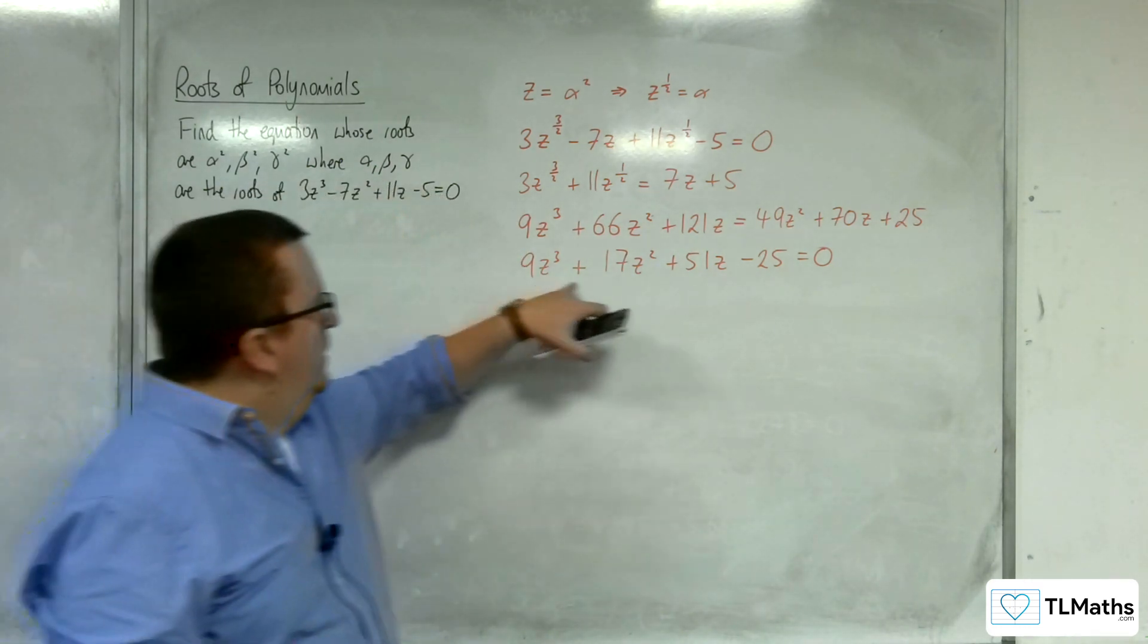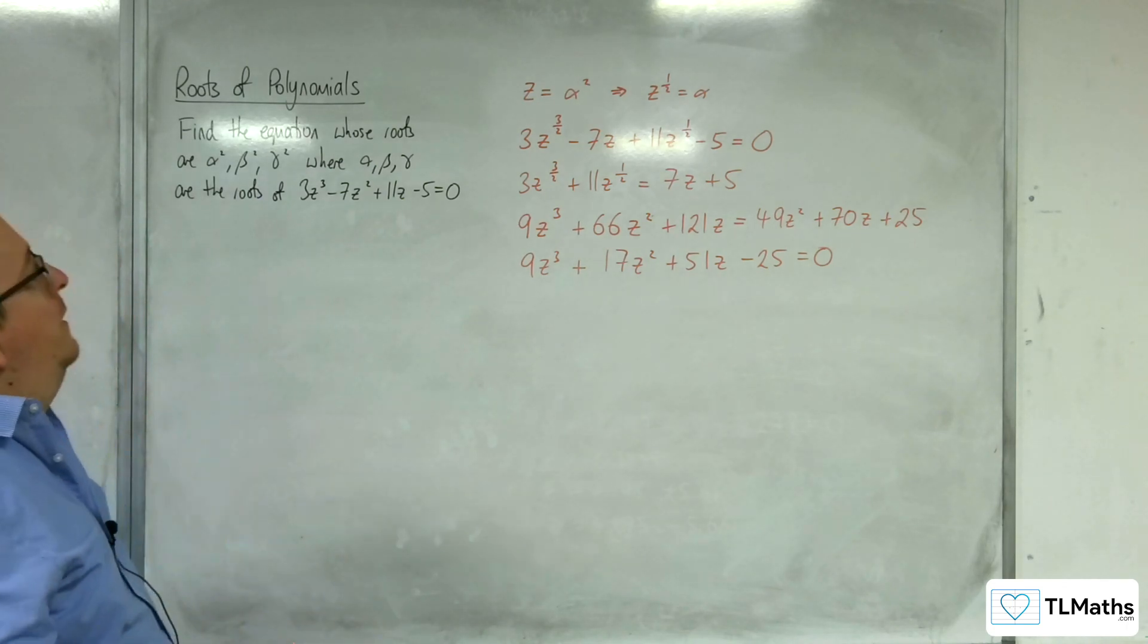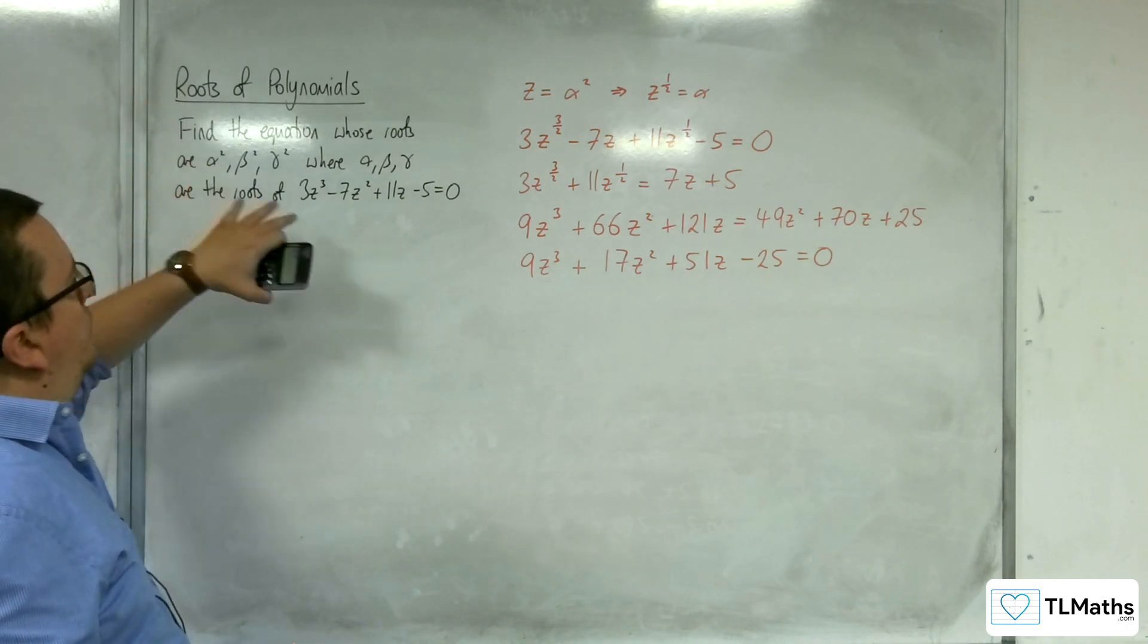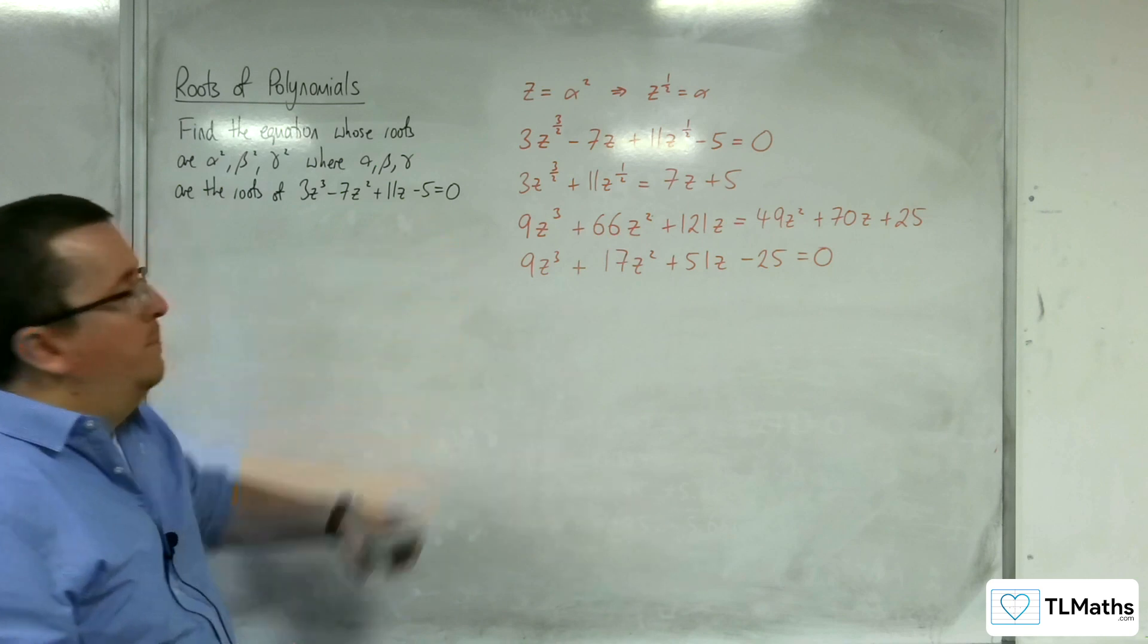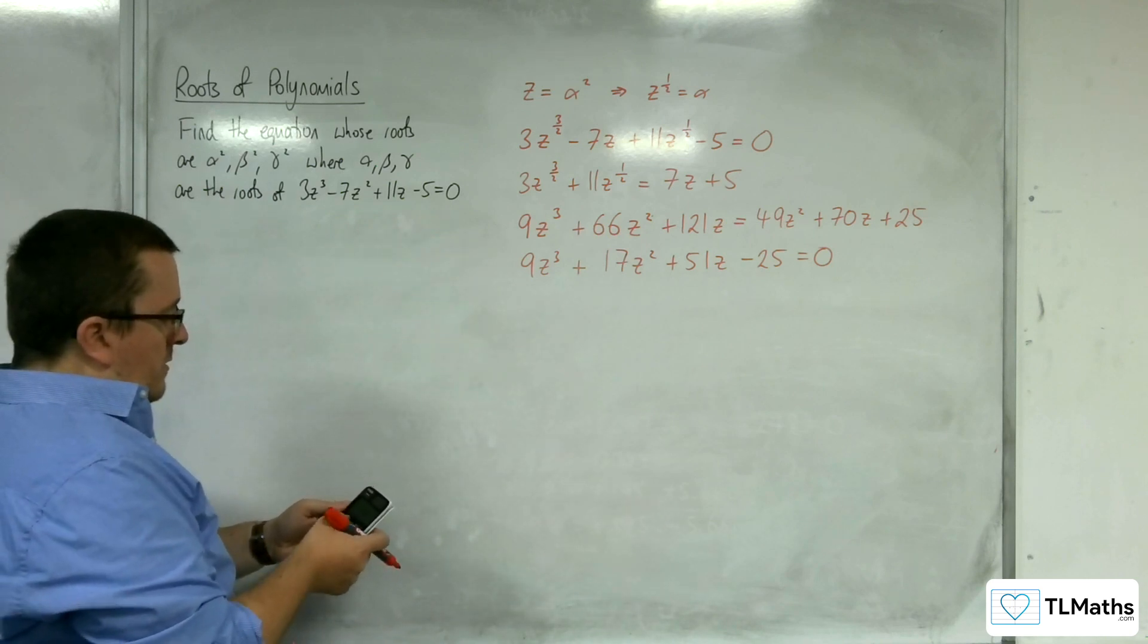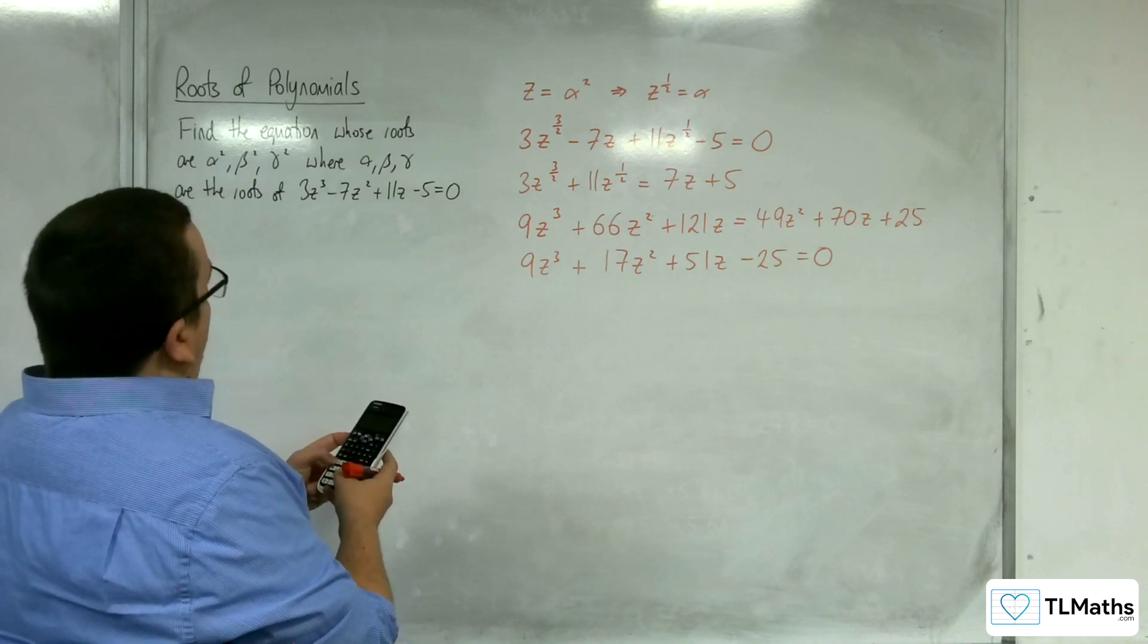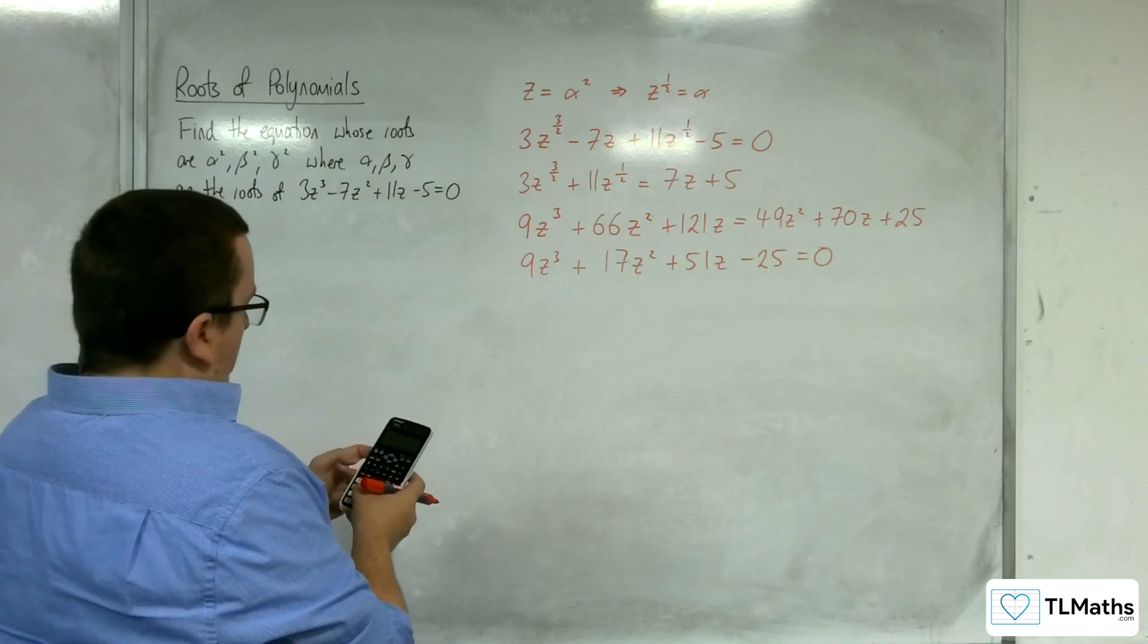And so here, you have a cubic now which should have the roots of the original, but now squared. So we can double-check that. If we go into our cubic solver, 3, minus 7, 11, and minus 5.